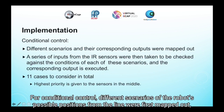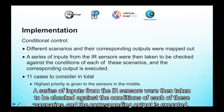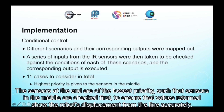For conditional control, different scenarios of the robot's possible positions from the line were first mapped out, and a corresponding action — a change in wheel speed — was assigned to each scenario to help the robot correct its position back to the centre of the line as fast as possible. A series of inputs from the IR sensors were then taken to be checked against the conditions of each of these scenarios, and the corresponding output was executed. There are 11 cases to consider in total, and the highest priority is given to the sensors in the middle. The sensors at the end are of the lowest priority, such that the sensors in the middle are checked first, to ensure that values returned show the robot's displacement from the line accurately.